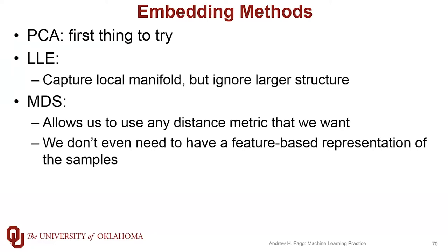Locally linear embedding is an approach that's really good at capturing the local manifold, but it does ignore the larger structure. Multidimensional scaling allows us to use any distance metric that we want. This is really important when we want to use something other than Euclidean distance, or even in situations where we don't even have a feature space to work with and just have a way to measure distances.